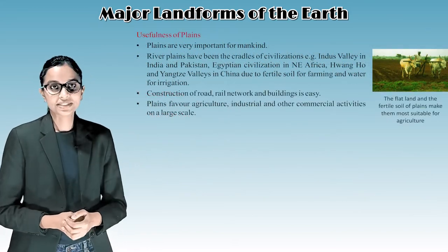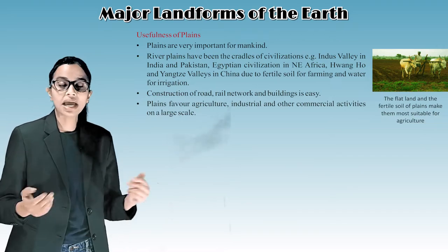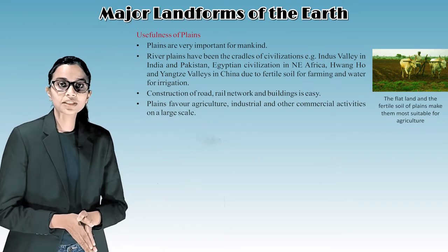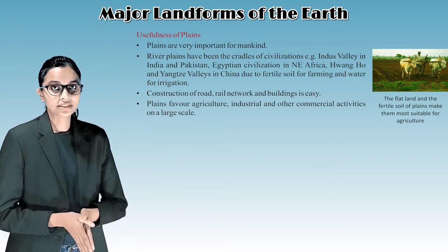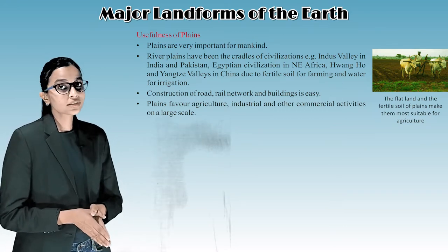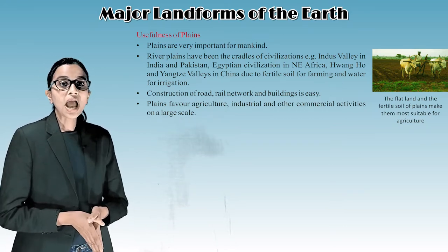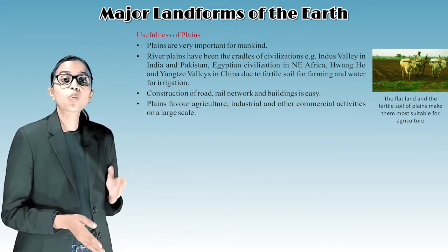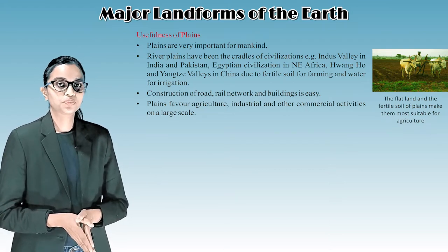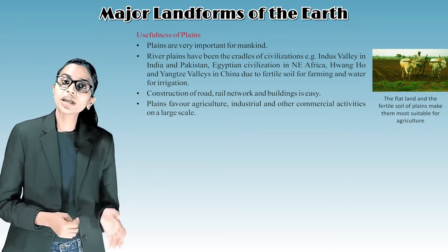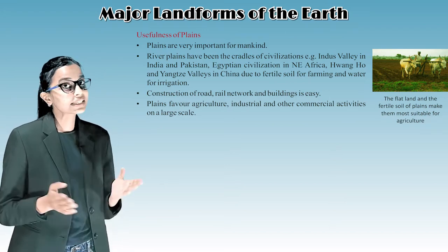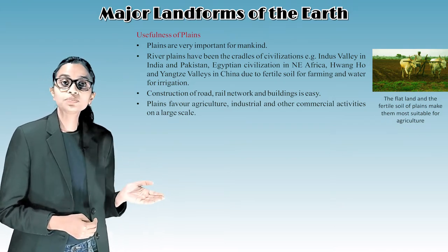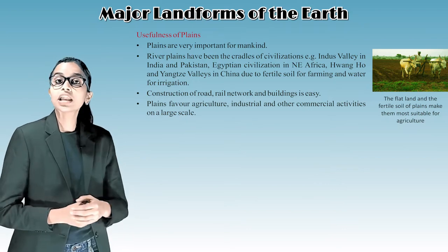Usefulness of plains: plains are very important for mankind. River plains have been the cradles of civilizations, such as the Indus Valley in India and Pakistan, the Egyptian civilization in northeast Africa, and the Huanghe and Yangtze valleys in China, due to fertile soil for farming and water for irrigation. Construction of road and rail networks and buildings is easy. Plains also favor agriculture, industrial, and other commercial activities on a large scale.